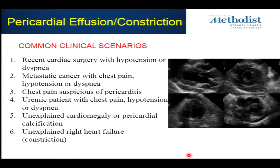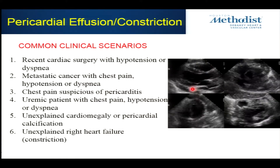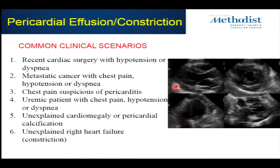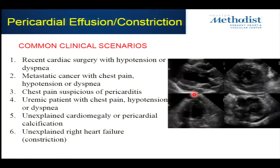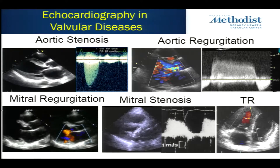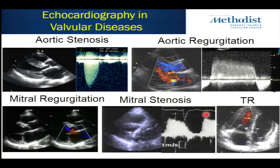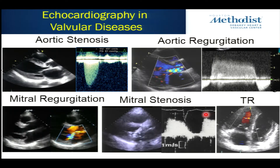Pericardial disease is very important. This is a constrictive effusive pericarditis on this patient. You can see where the pericardial fluid is — anteriorly as well as posteriorly — and I think this is very important going forward in patients that you're suspecting pericarditis or constrictive pericarditis.